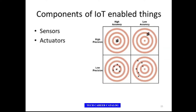Then we have the actuator, which receives an electronic signal from the controller and responds by interacting with its environment to produce an effect on some physical, chemical, or biological parameter. Actuators come in types: hydraulic, pneumatic, electric, mechanical, and others. Then we have the embedded system — the term refers to the use of electronics and software within a product that has a specific function or set of functions. This is not a general purpose computer such as a laptop or desktop; your refrigerator is an embedded device.